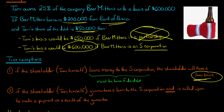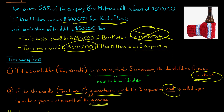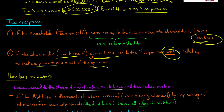The second exception: if the shareholder — Tom — guarantees a loan to the S corporation and is called upon to make a payment as a result of that guarantee. Going back to the Bank of America example: if the S corporation borrows money from Bank of America and Tom personally guarantees that loan, and then later, as a result of that guarantee, Tom has to fork over some money, in that case Tom would get a loan basis. So let's talk about how loan basis works.